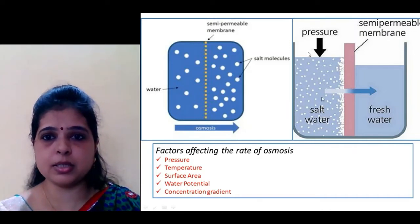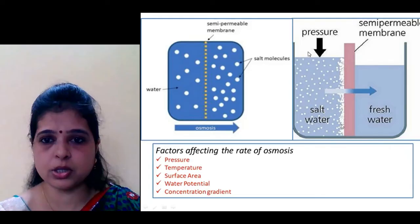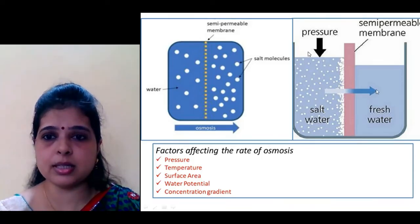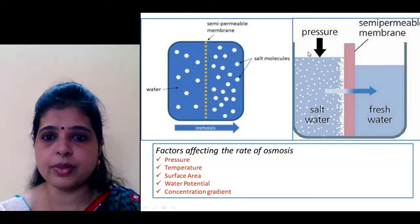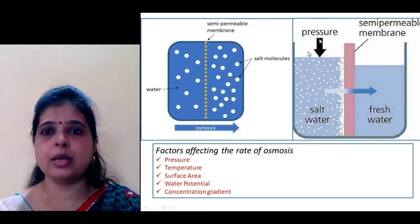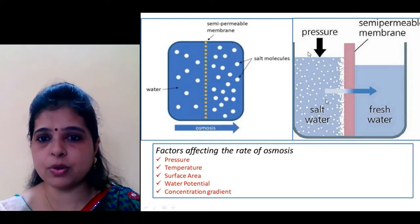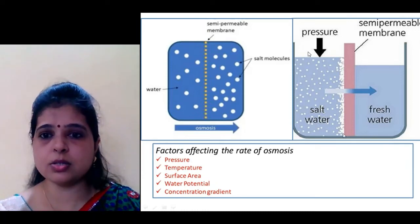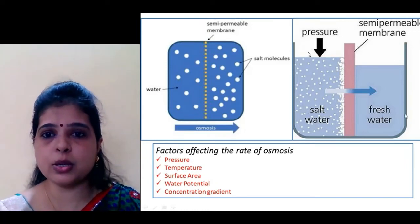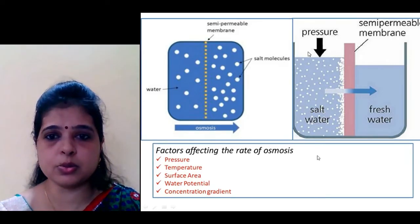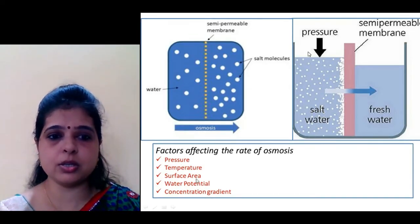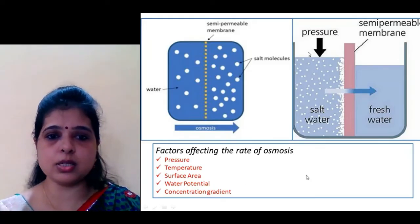But if you apply some external pressure on the side with the high concentration of salt, the normal process of osmosis — that is, from fresh water to salt water — will not occur. Instead, by the external pressure, water will pass from the salty water to the fresh water. This process is called reverse osmosis. Reverse osmosis is used in making salt. The factors which affect the rate of osmosis are pressure, temperature, surface area, water potential, and concentration gradient.